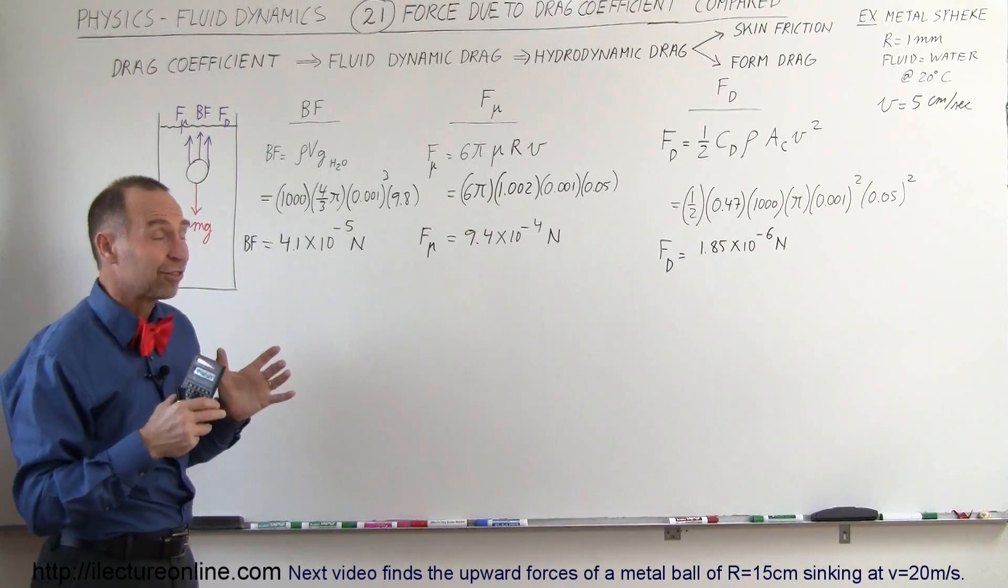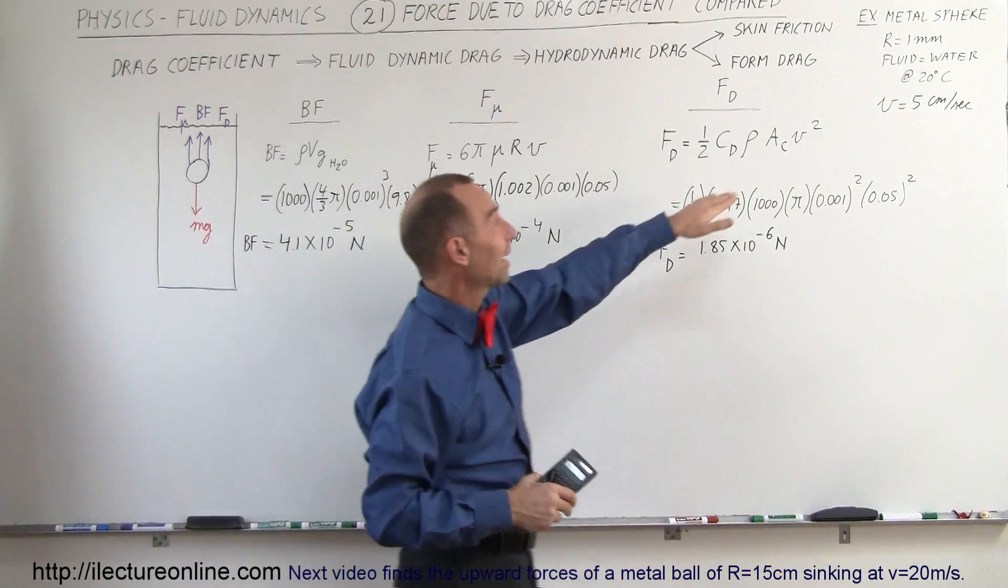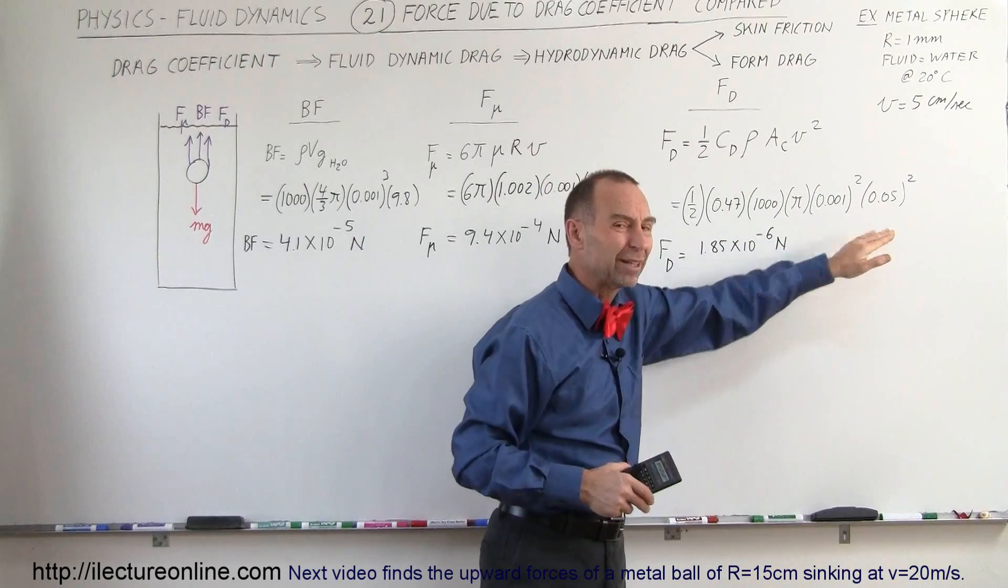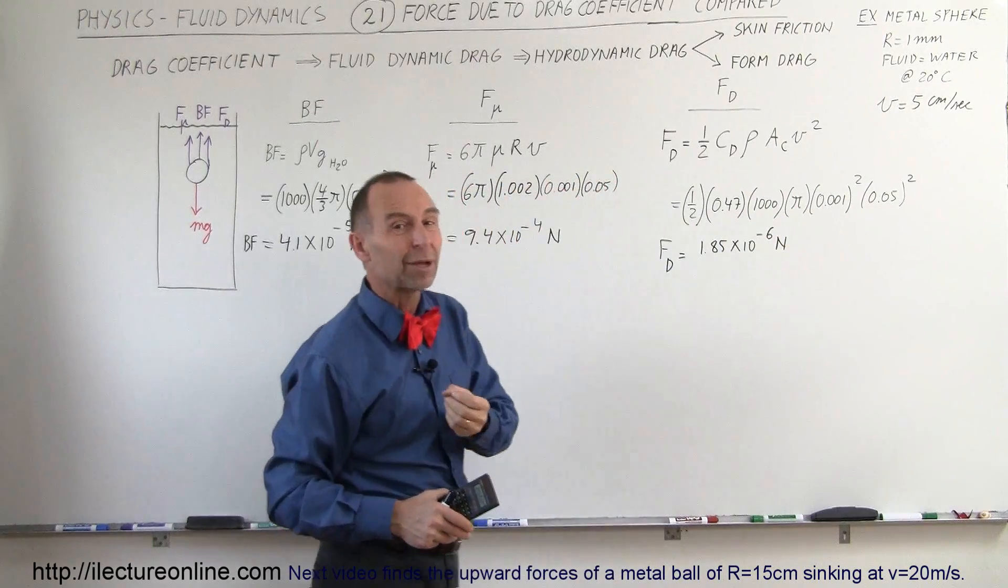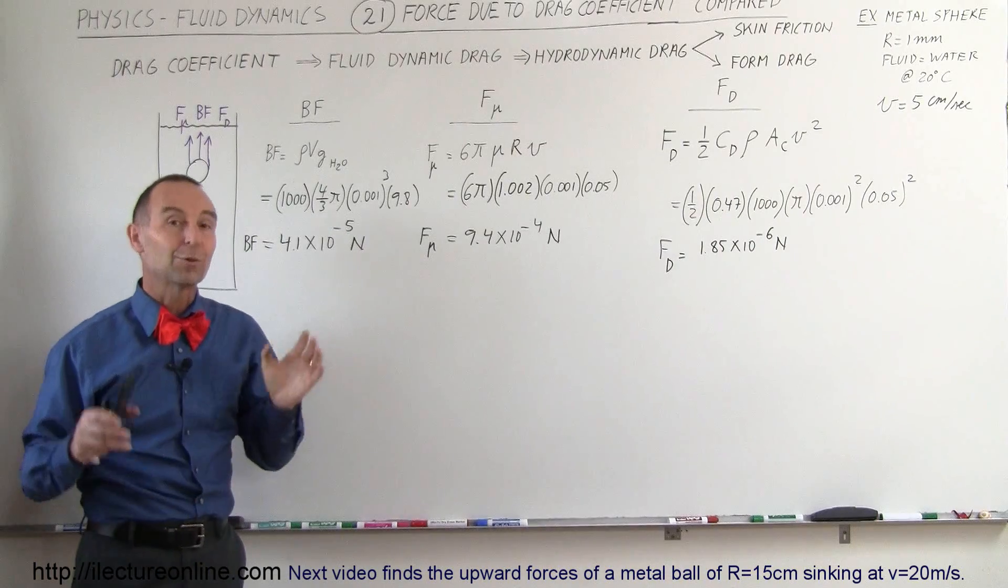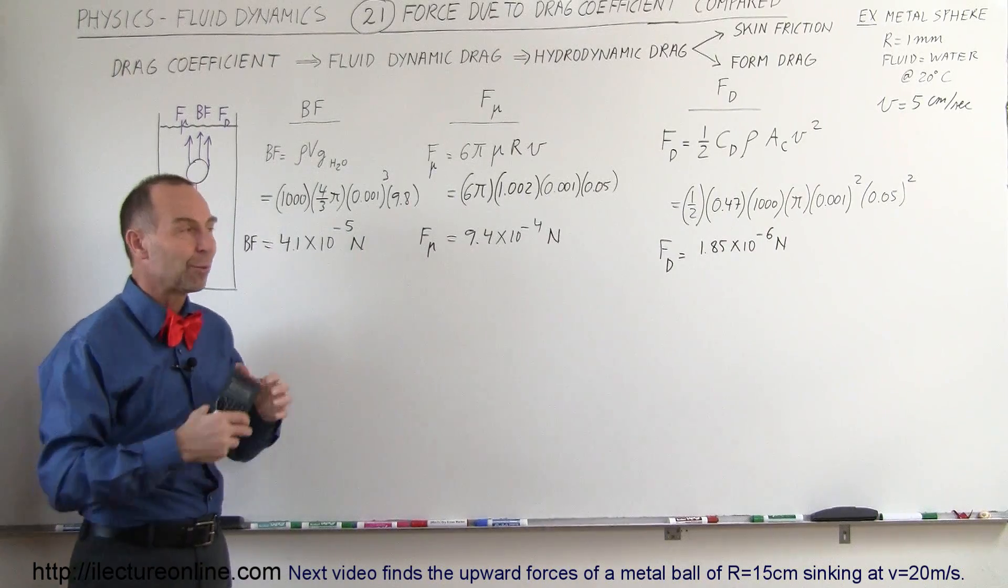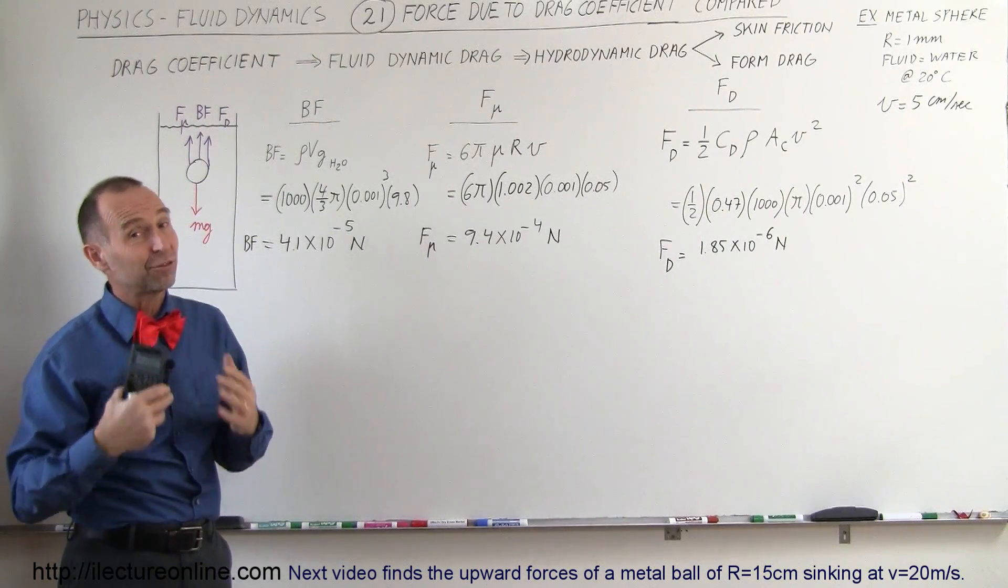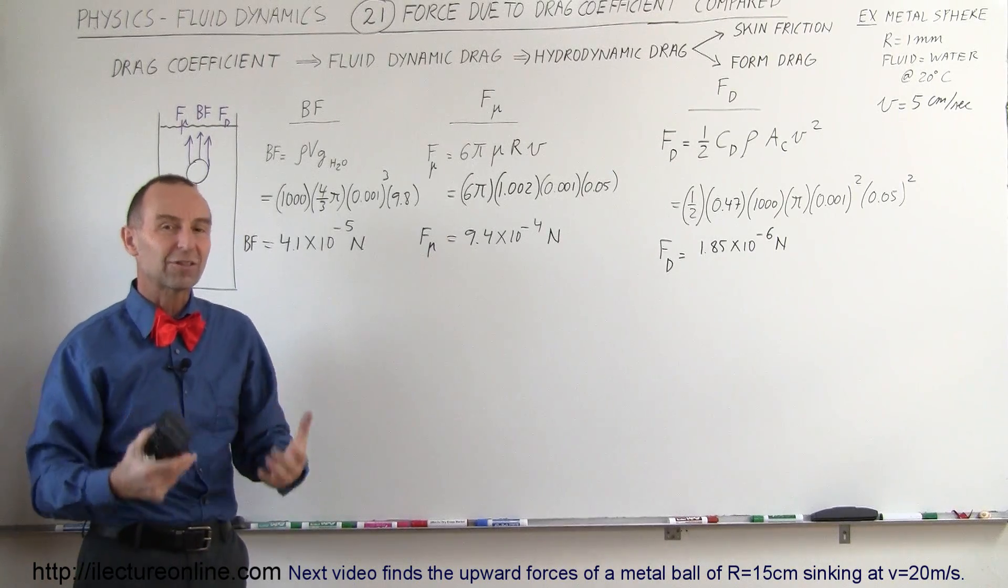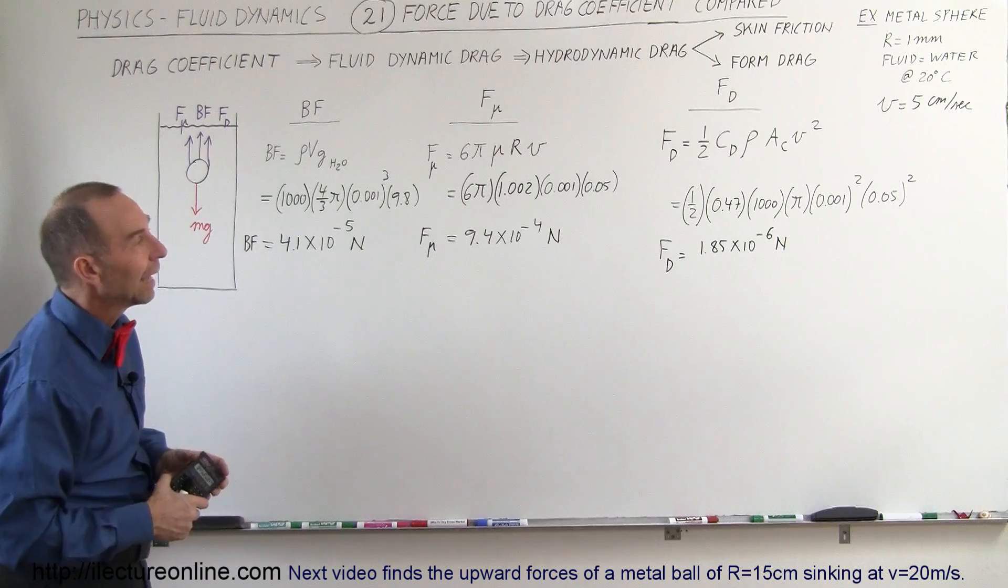But for larger objects moving much faster, you can see that since the cross-sectional area would be much bigger and since the velocity would be much bigger, the drag coefficient then becomes a big factor, a big player in how objects move through the fluid. We'll see that in the next video where we're going to use a larger object moving much faster and see how the drag coefficient changes with changing mass, changing speed, and changing cross-sectional area.